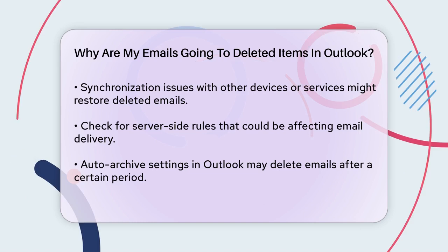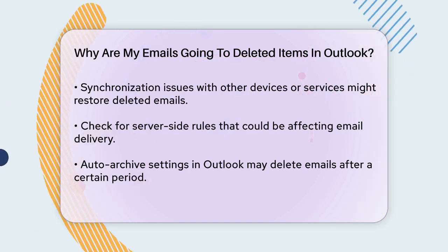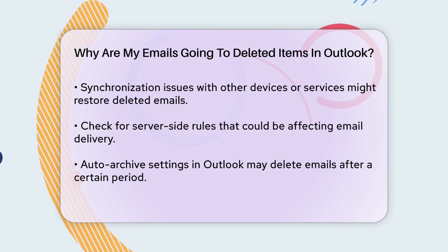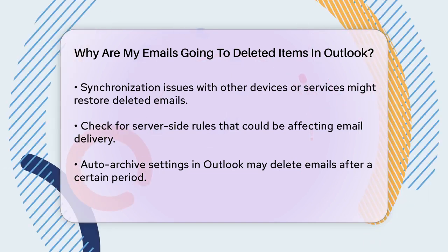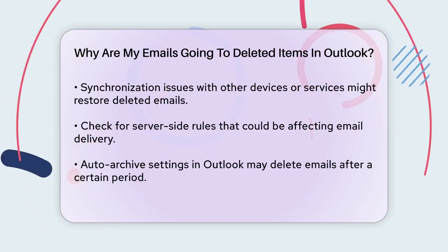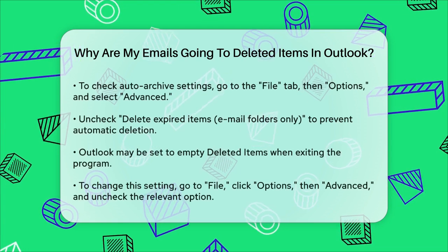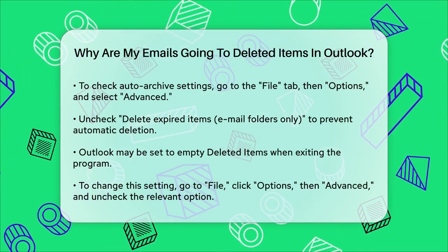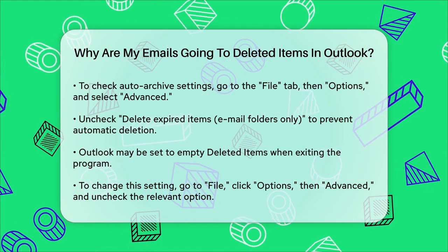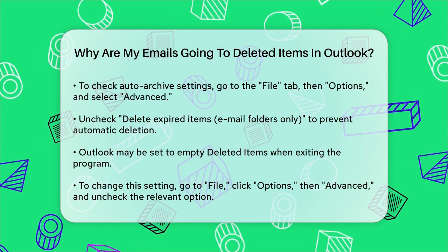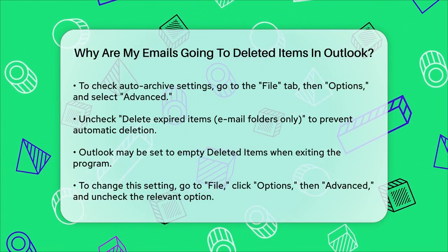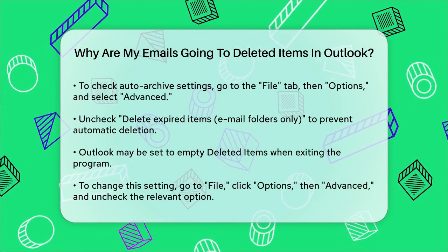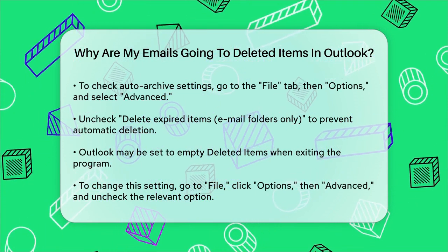Outlook's auto-archive settings might also be contributing to the problem. If the Delete Expired Items (Email Folders Only) option is selected, it could be deleting emails after a certain period. To check this, open Outlook, click on the File tab, then Options, and select Advanced. Scroll down to the Auto Archive section and check if this option is selected. If it is, uncheck it to prevent automatic deletion.